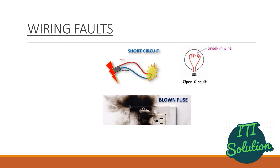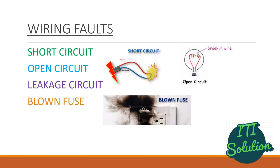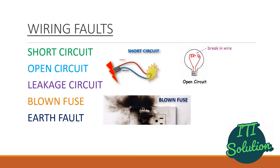Wiring system may have a lot of faults. Types of faults include: short circuit, open circuit, leakage current, blown fuse, and earth fault. These are all types of faults a wiring system may experience.